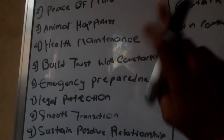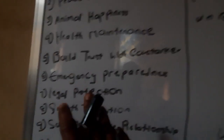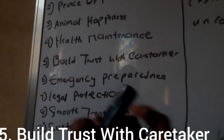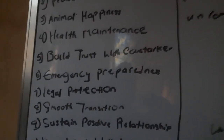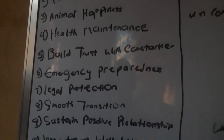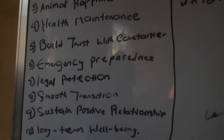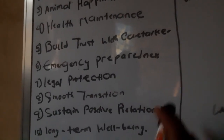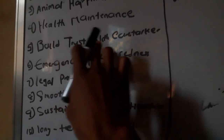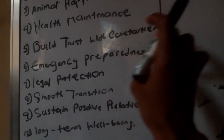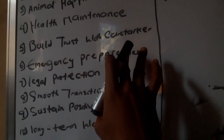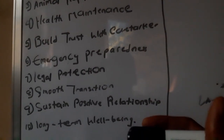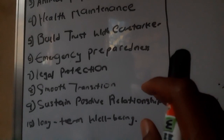Number five is that there will be trust built with the health caretaker. Due to the relationship both of you have in common, you will be able to build trust between you and the caretaker, and with that the farm will be running well in your absence.